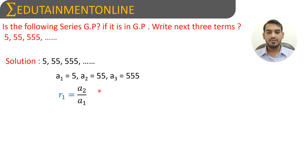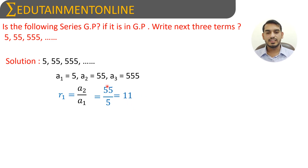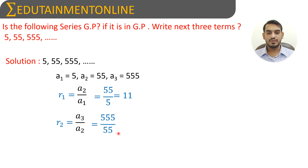a2 divided by a1 equals 55 divided by 5, which is 11. So the first ratio is 11. Now we will find the second ratio, which is between the third term and the second term: a3 divided by a2, which equals 555 divided by 55.